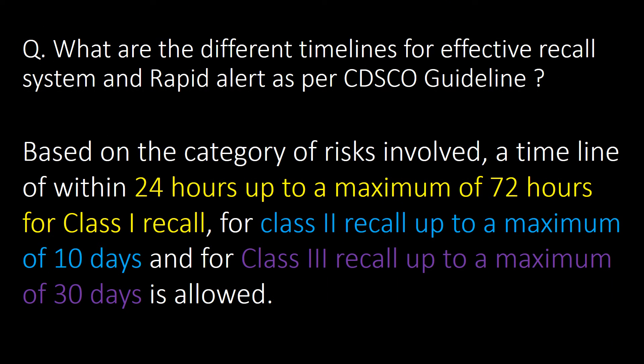What are the different timelines for an effective recall system and rapid alert as per CDSCO guideline? As per CDSCO, based on the category of risk involved: within 24 hours up to a maximum of 72 hours for Class 1 recall; up to a maximum of 10 days for Class 2 recall; and up to a maximum of 30 days for Class 3 recall.